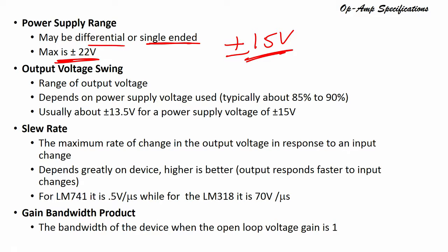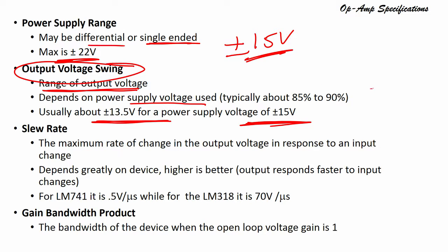Output voltage swing is the range of output voltage, which depends on the power supply voltage. It is typically about ±13.5 volts when the supply is ±15 volts — meaning the output can swing to about 85 to 95 percent of the supply voltage.